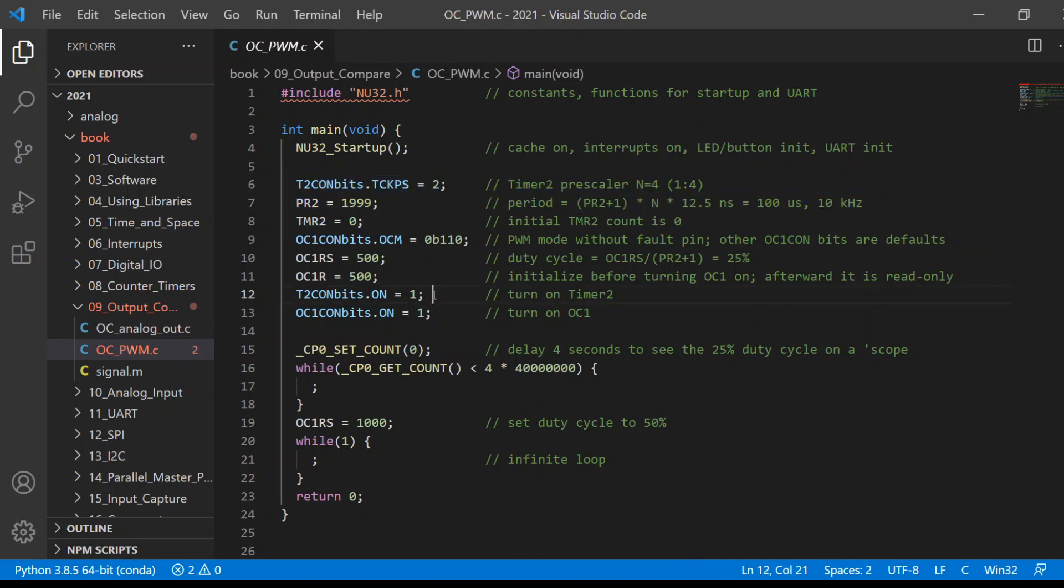Once we turn it on, it will start to tick. Before we turn it on, we're going to use OC1. There's actually a couple modes in the OC module to get PWM. So by setting the OCM bits to 110, we're getting our typical PWM mode. Then we'll set our initial duty cycle. So our initial duty cycle will be 500, and this is the one time we can set OC1R. So we'll initialize it to 500. The first time through, it'll use the value 500. Then from then on, it'll always copy OC1S into OC1R. Then we turn them both on.